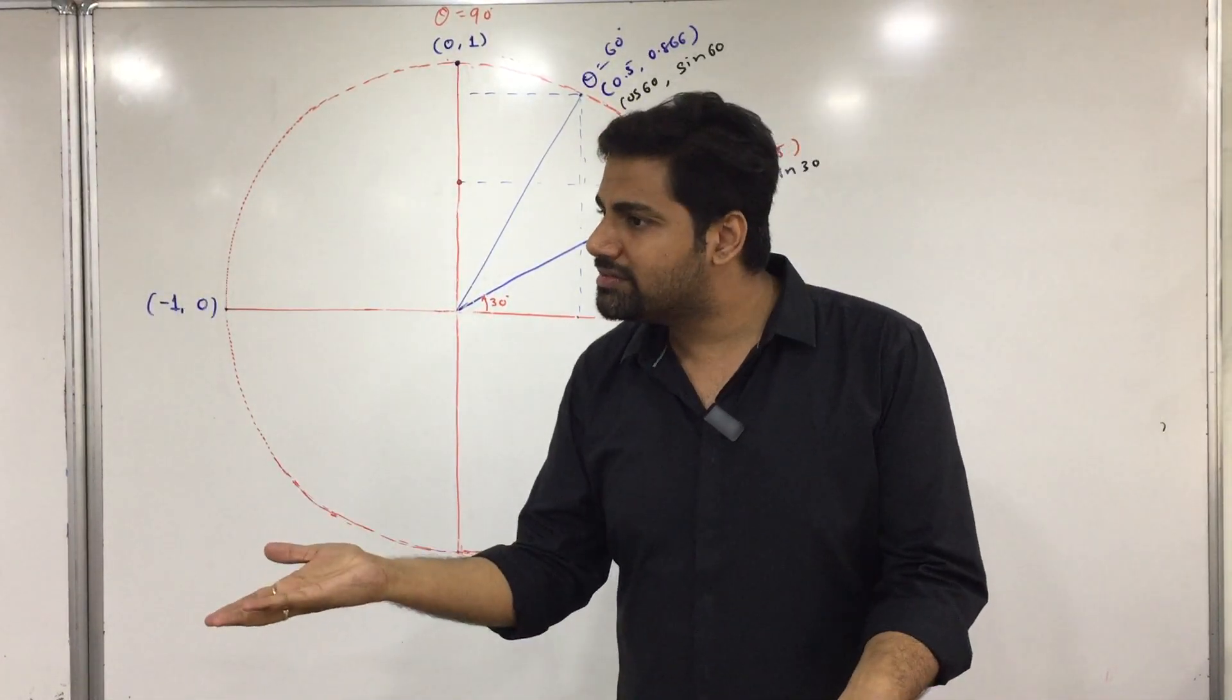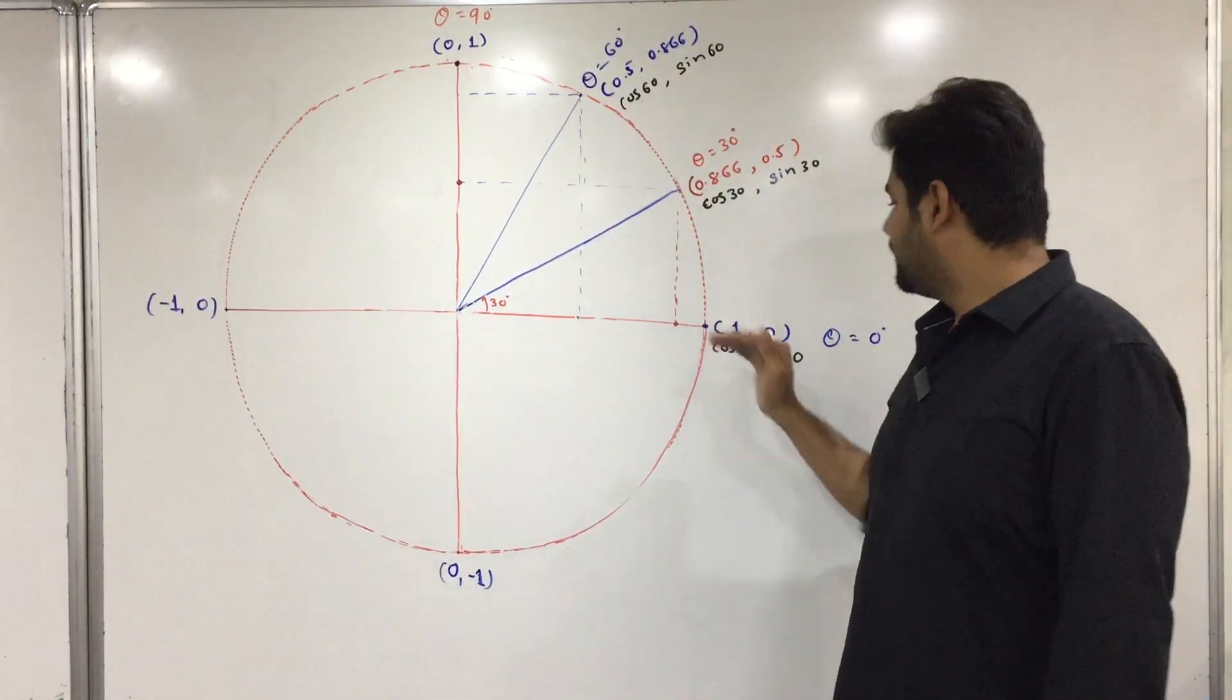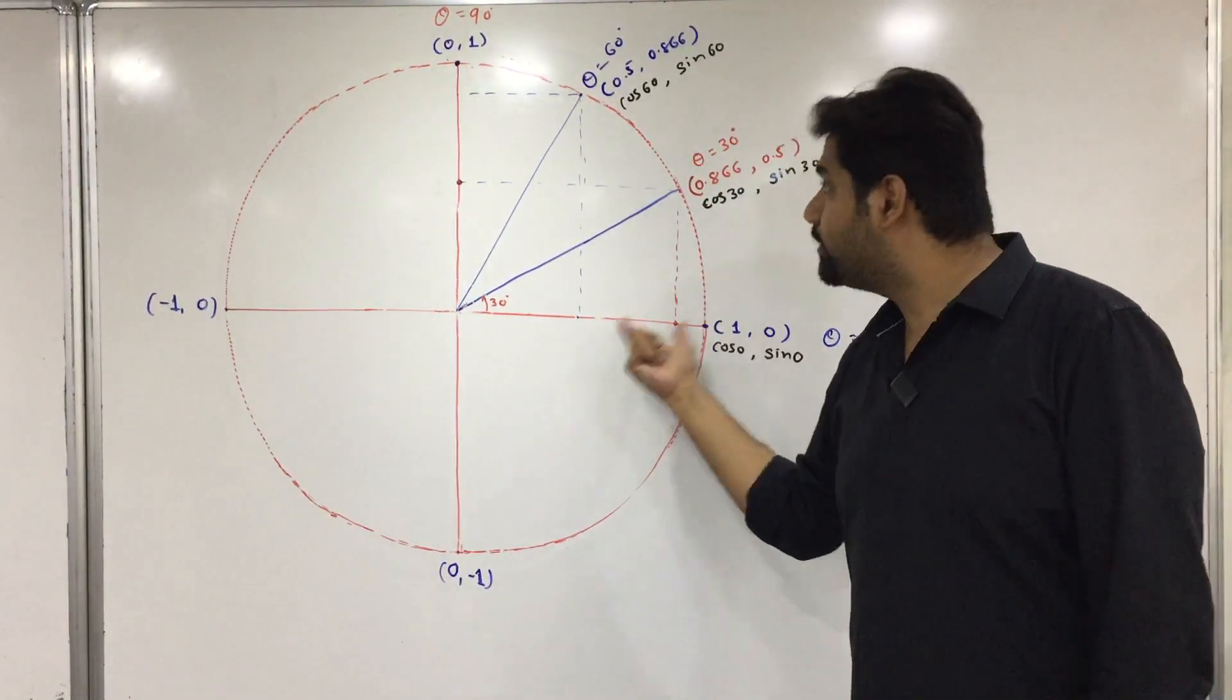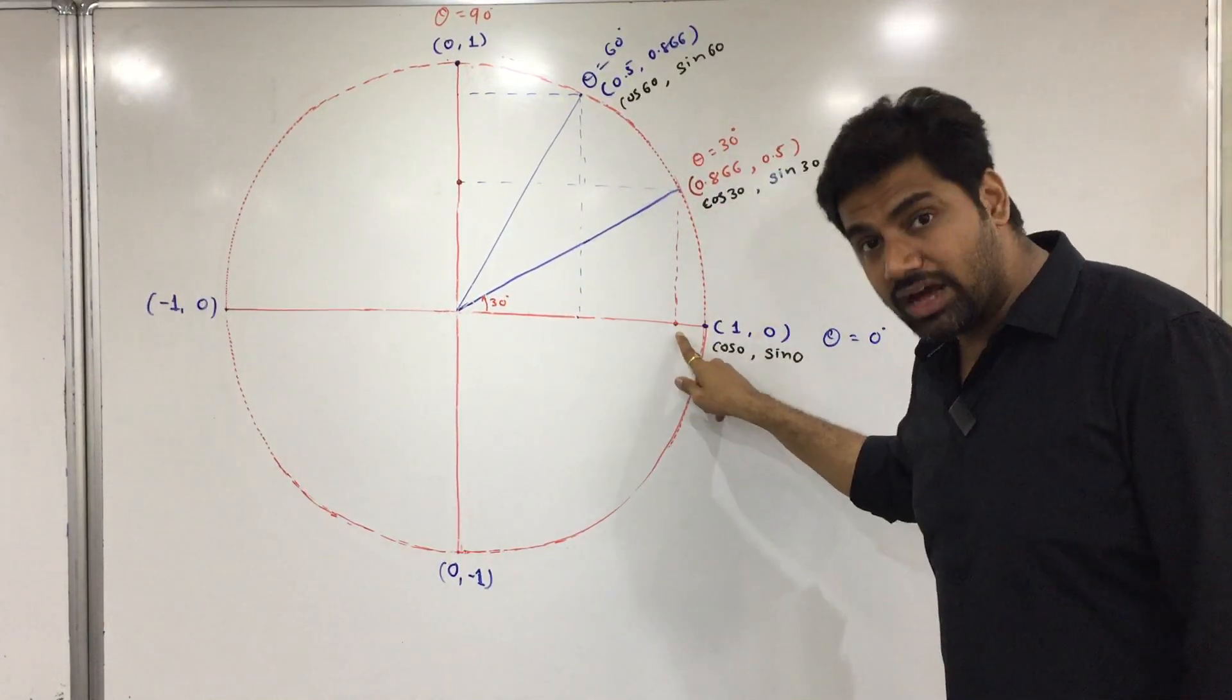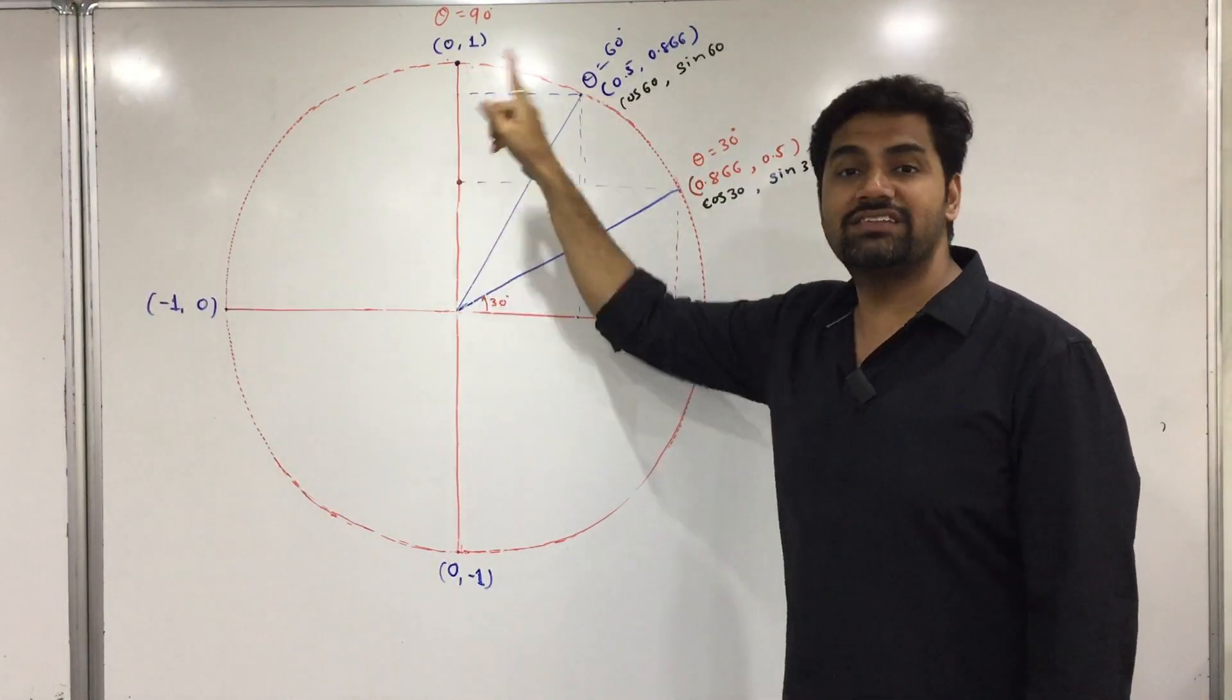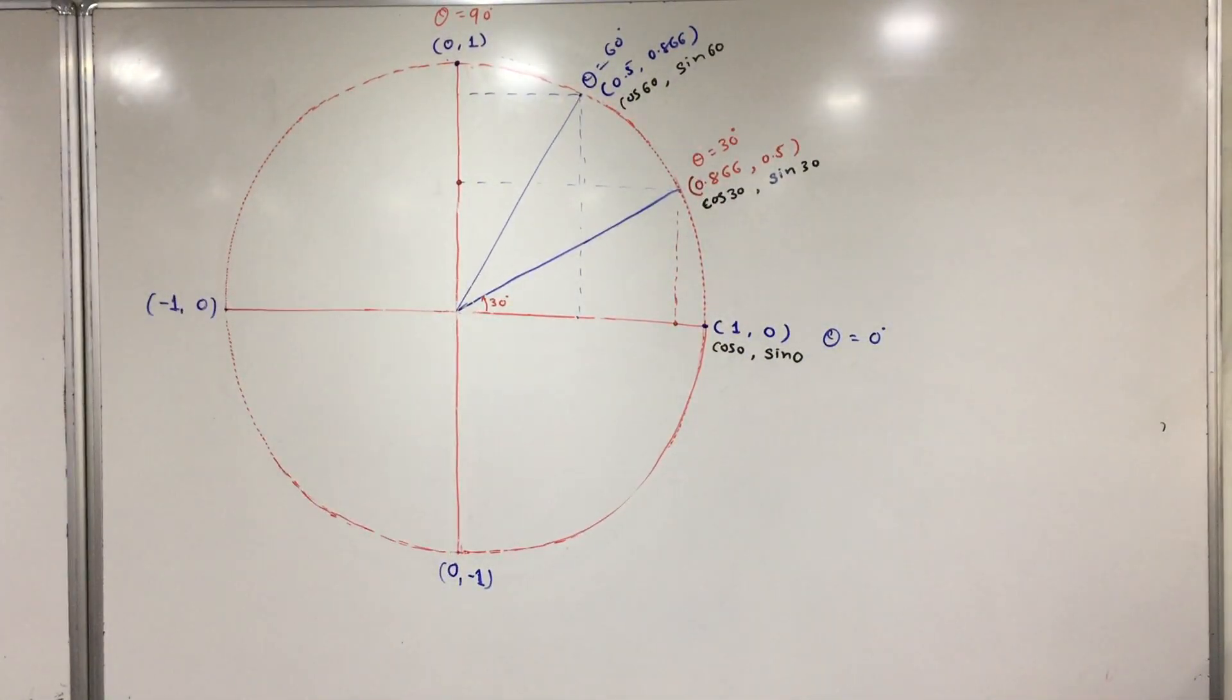90 degree or 0 degree you already know. Draw this and you have to validate. Yes it is exactly coming 8.666 and this is 0.5 and this is exactly coming 0.5 and this is 0.866.